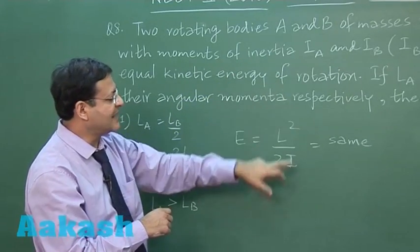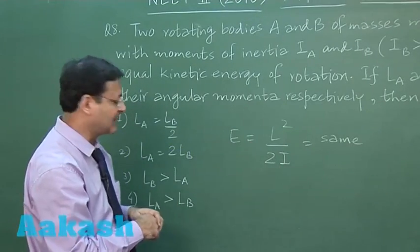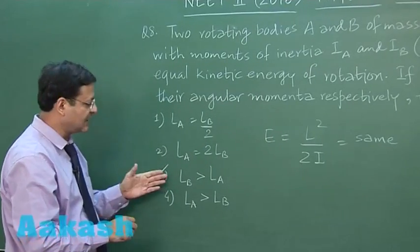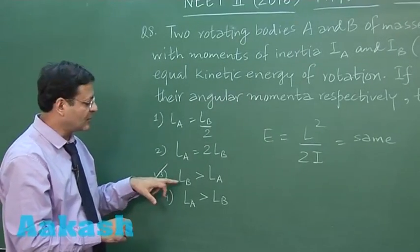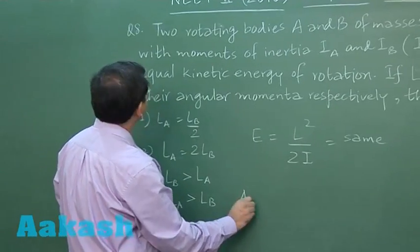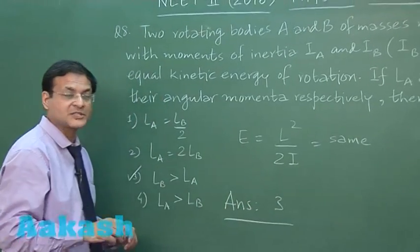So if B has larger moment of inertia, then B should have larger angular momentum as well. And for that matter I will be marking answer 3 because here it says that angular momentum of B is greater than that of A. So our answer for this question number 8 will be answer 3.